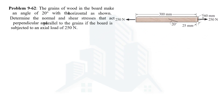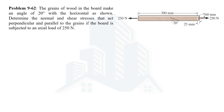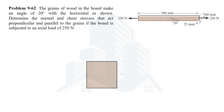So let's solve this problem. Since the grains make an angle of 20 degrees, let's consider a horizontal element like the one shown in this picture. Taking this element and determining the stresses that act on it — we are given the 250 Newton force and the dimensions — so we can calculate the normal stress. Normal stress acting on this element would be force over area: 250 divided by area, which is 25 multiplied by 60, giving 166.67 kPa.